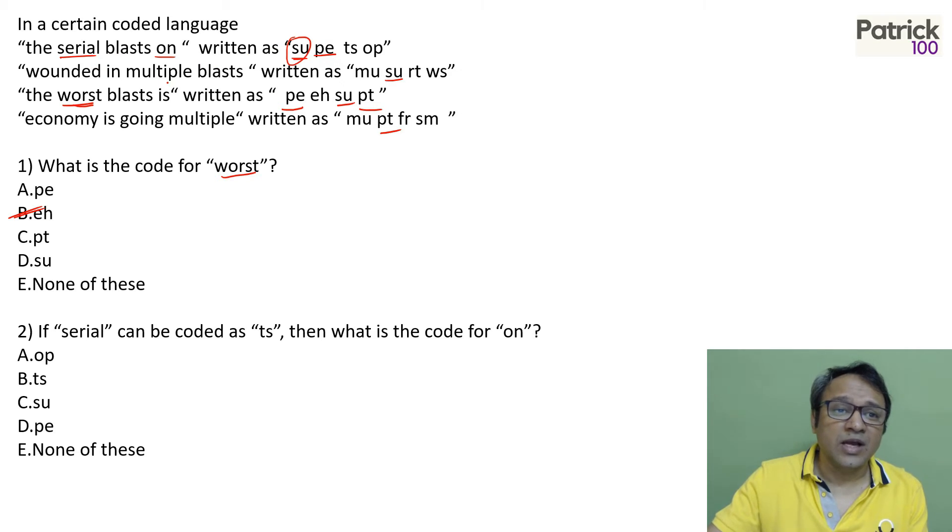SU is DER. And if you look at BLAST is there next. So BLAST will be SU and PE. BLAST also is there. SU and PE are BLAST and DER. So TS and OP are Serial and ON. From there, if TS is Serial, then ON will be OP, A option.